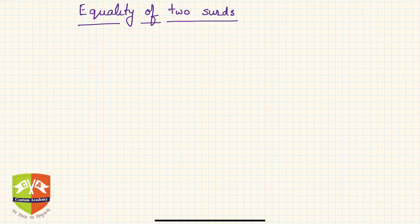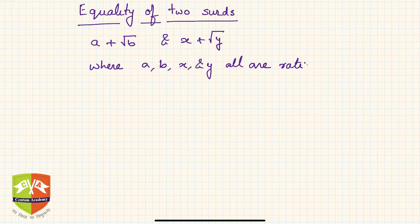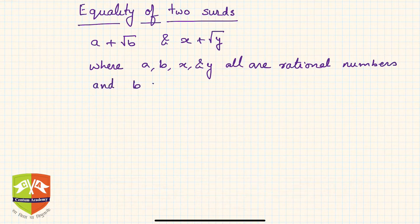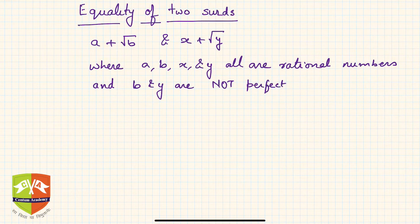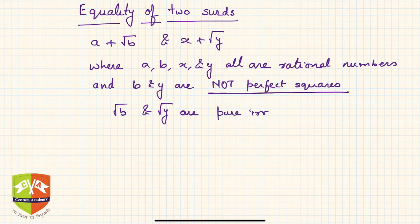Let us say we have two surds: a plus root b, and x plus root y, where a, b, x, and y are all rational numbers. And b and y are not perfect squares. That means root of b and root of y are pure irrational numbers.